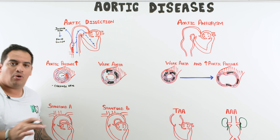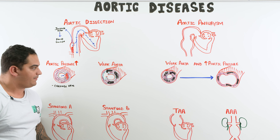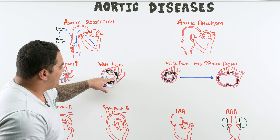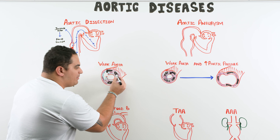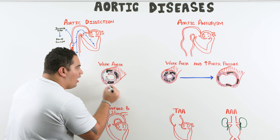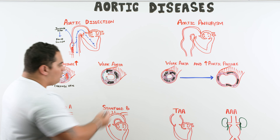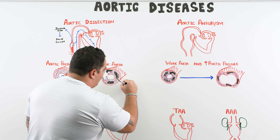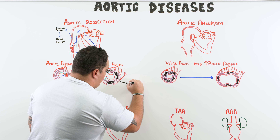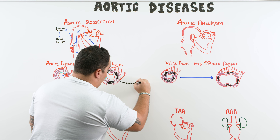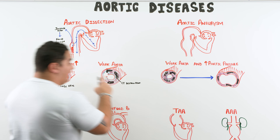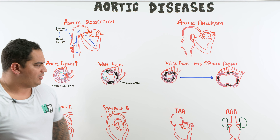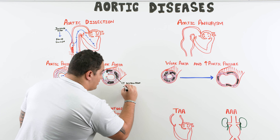What causes aortic pressure to be that high? Chronic hypertension — that is by far the most common cause of aortic dissections. The other cause is something producing breakdown or damage to the actual vessel wall itself.